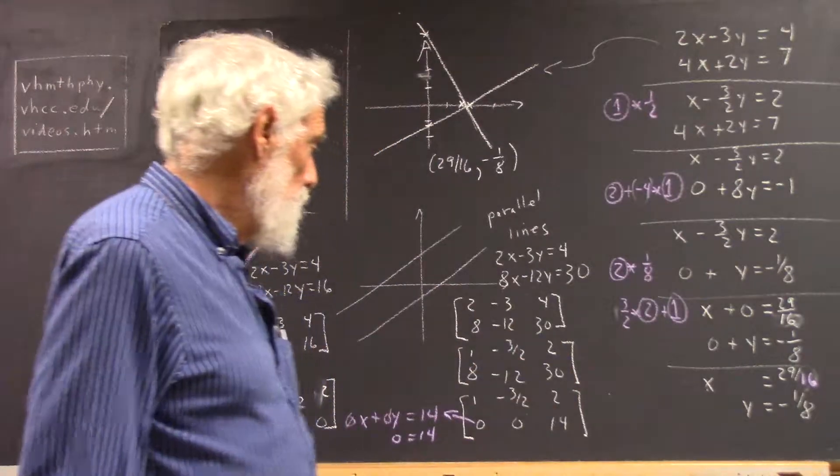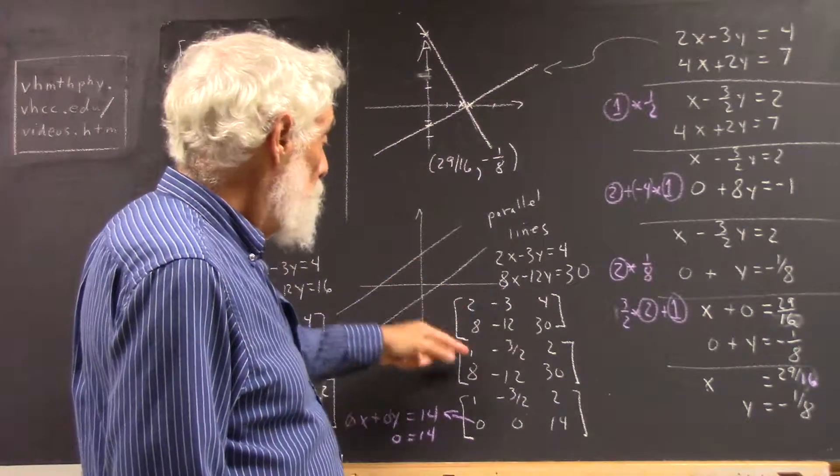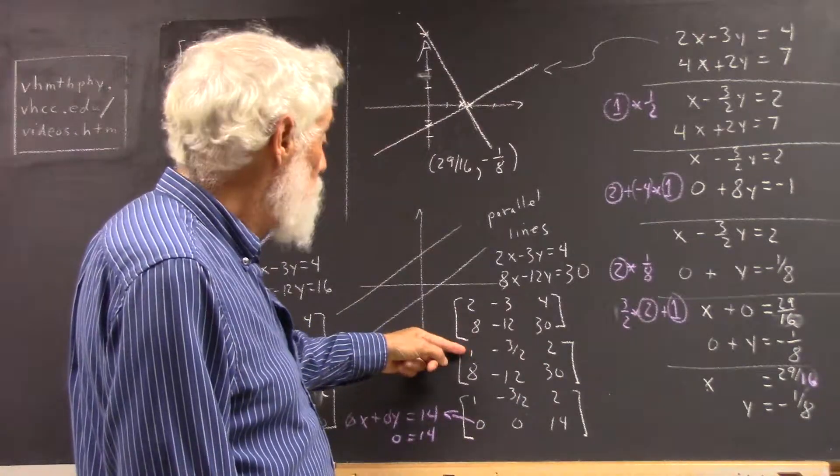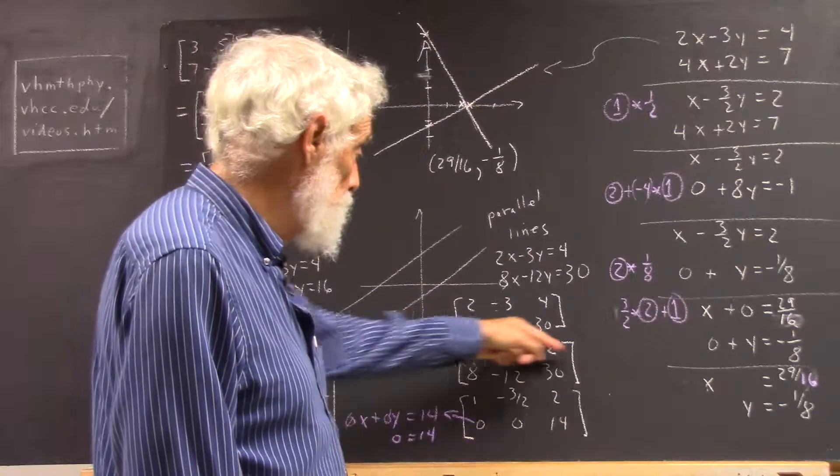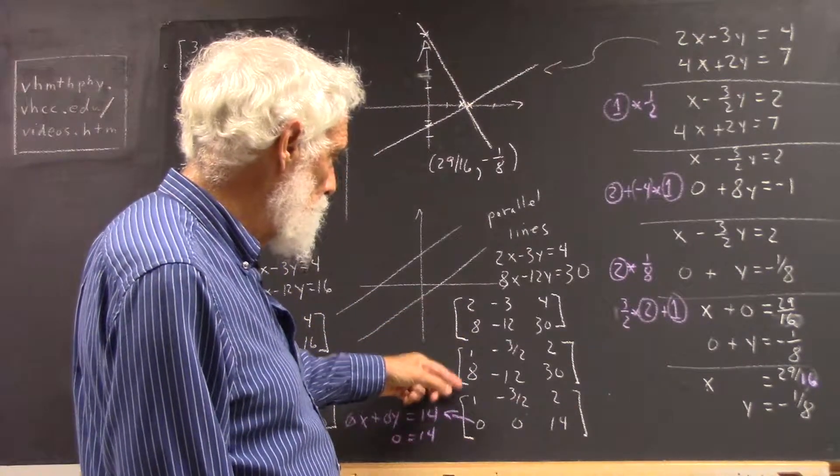Now, if we put them in the matrix form and reduce the matrix, okay, well, what do we do? We want a 1 here. It's the first thing we want. You've got to get used to that process. You've got to practice it. We need a 1 here, so we take half of the first row. And then we add negative 8 times the first row to the second row, and we get this.